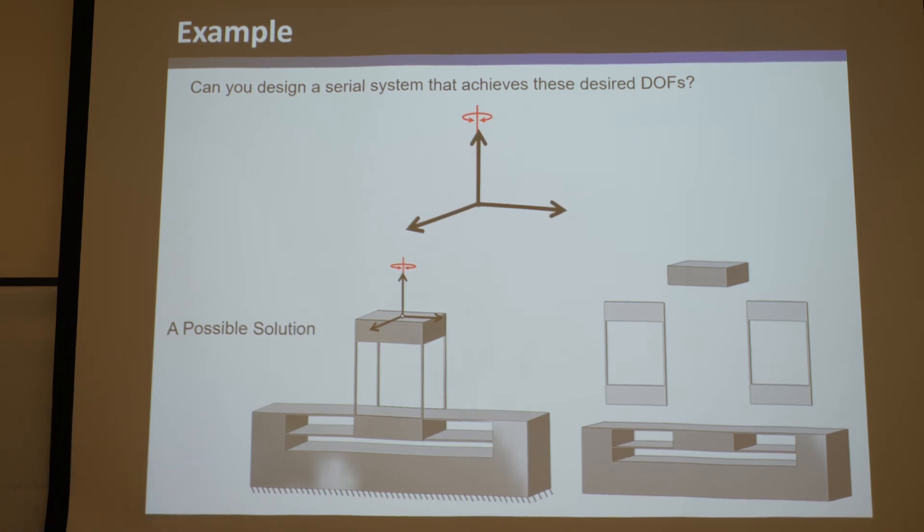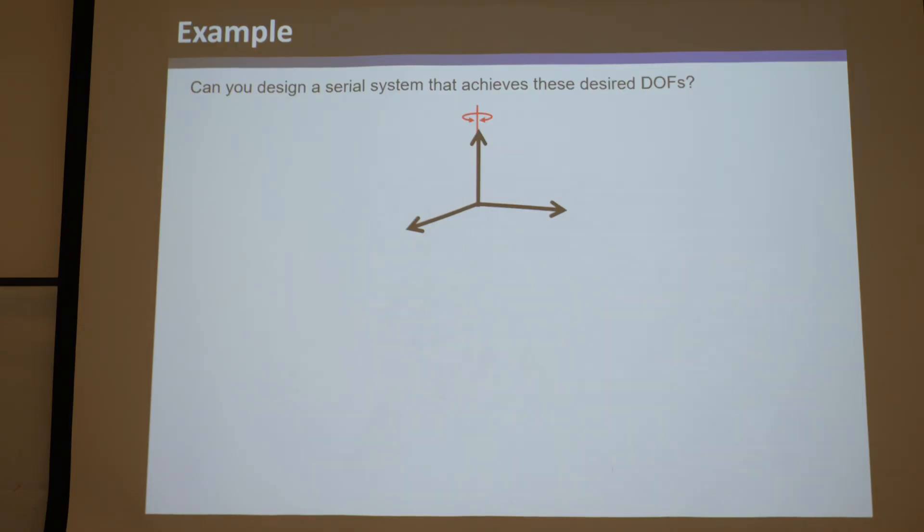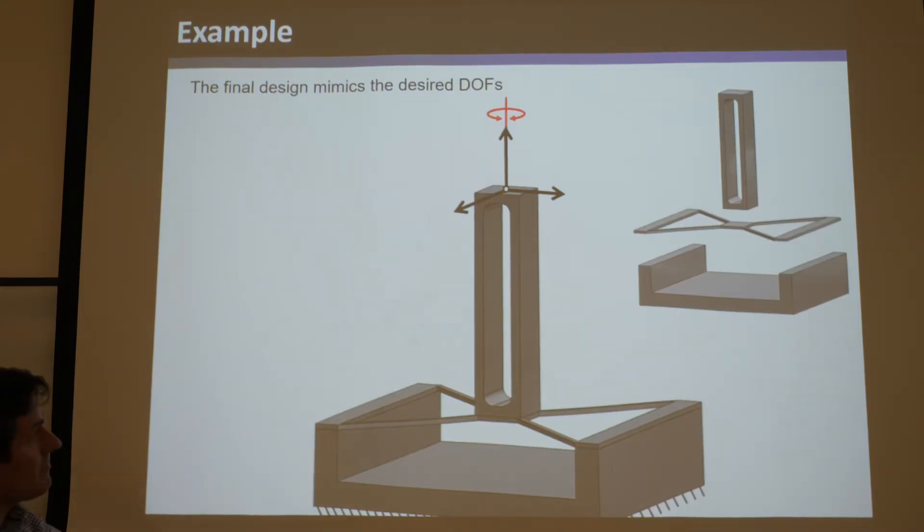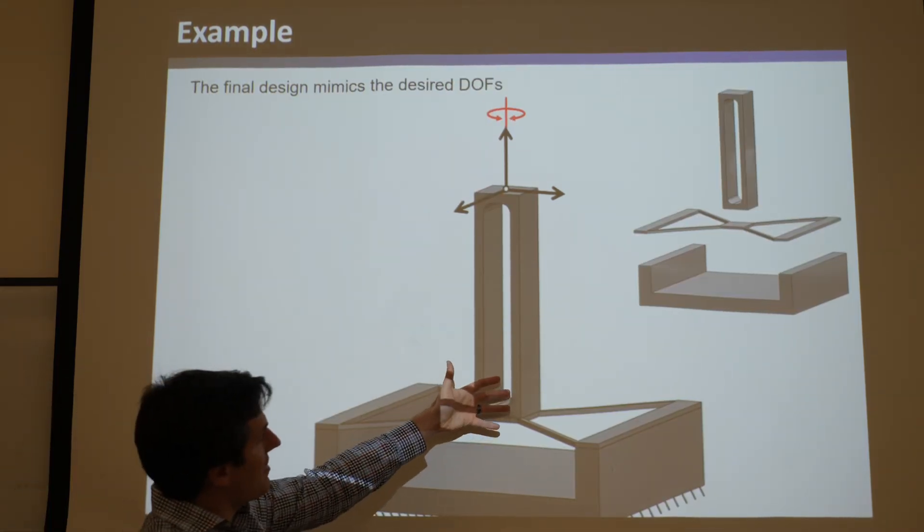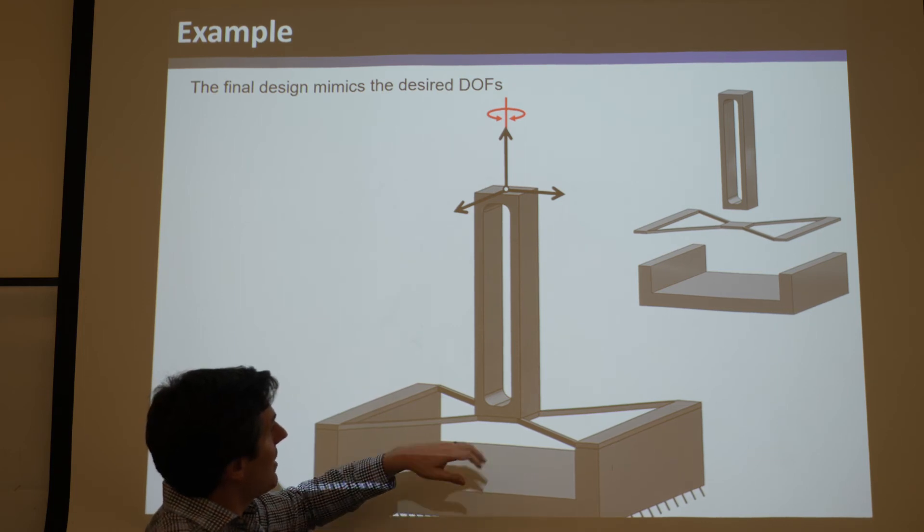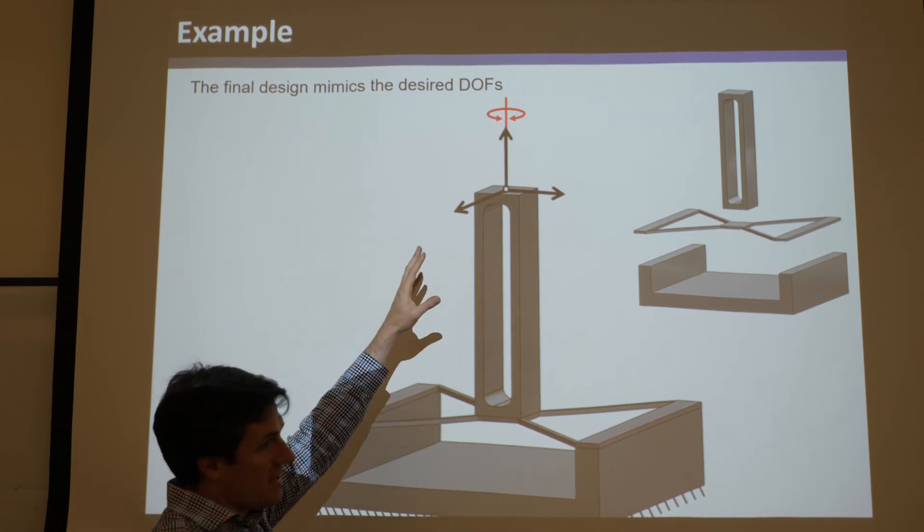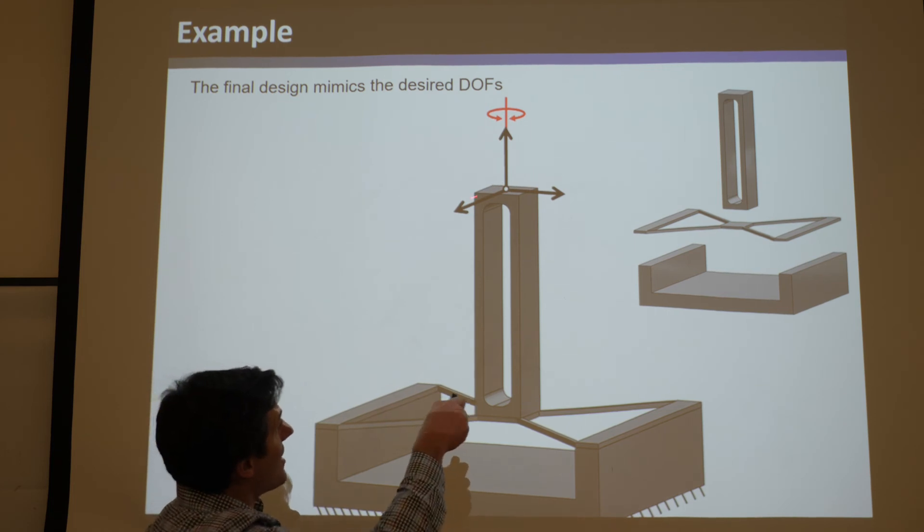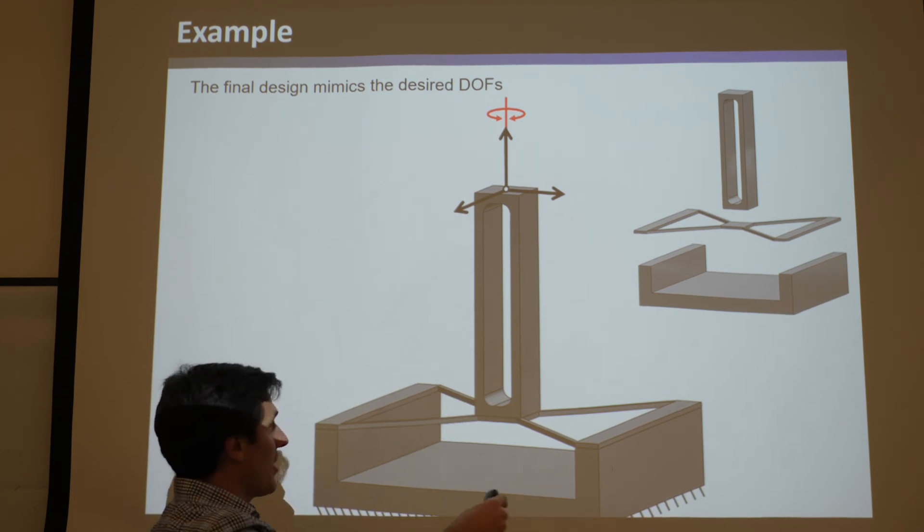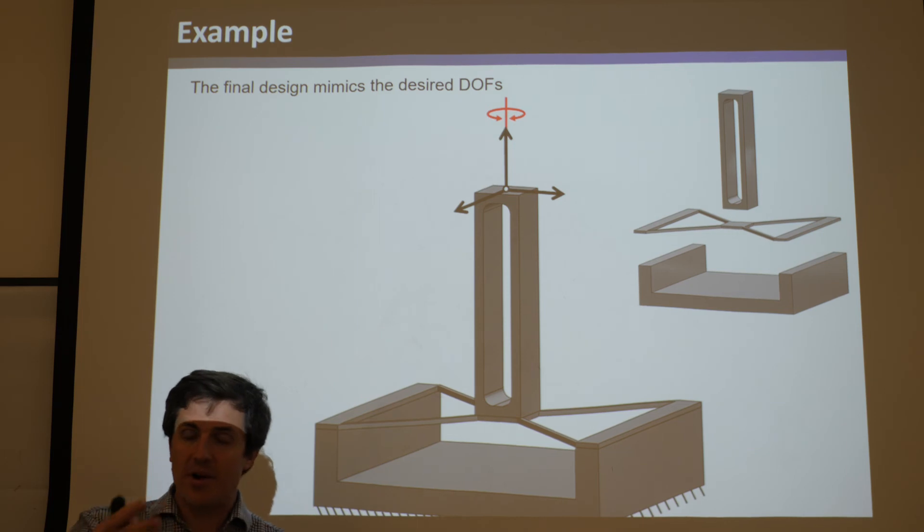And they may actually have worse parasitic errors than this stage, right? That achieves these things with, for the first instant, it's not getting a pure translation, but over a large range of deformation, it's arcing just like the other ones, and it might even have better or less parasitic error.